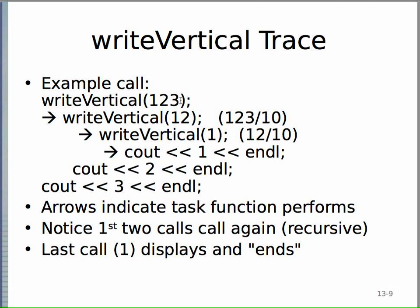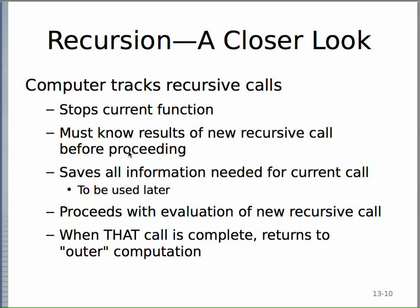So if you call write_vertical with 123, this calls write_vertical with 12, which calls write_vertical with 1. You hit the base case and print 1, then return to where n was 12 and print 12 mod 10 = 2, then return to where n was 123 and print 123 mod 10 = 3. The arrows show how this function calls itself recursively. The original call leads to two recursive calls, and the last one hits the base case — that's where the recursion ends.